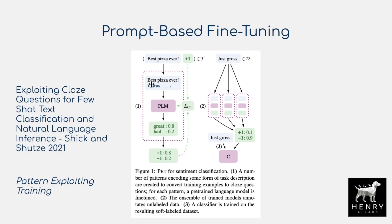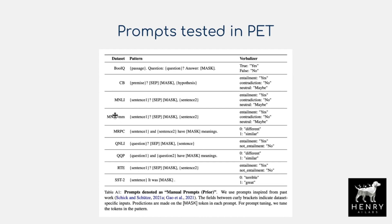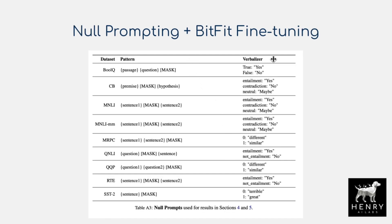Pattern exploiting training tests prompt-based fine-tuning strategies with prompts customized for each GLUE benchmark task. For natural language inference, you use the premise and hypothesis with a [MASK] and question mark pattern. For QQP, you use question one, insert the pattern, then question two with [MASK], where "different" and "similar" are mapped to class labels. What this paper explores is the utility of null prompting with verbalizer — no prompt template, just a [MASK] at the end of the inputs.